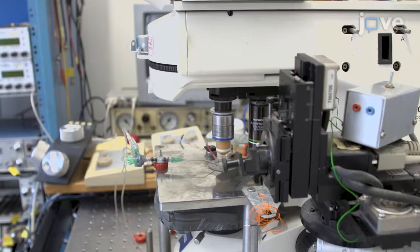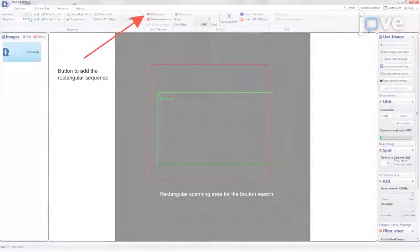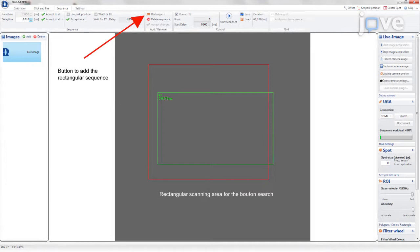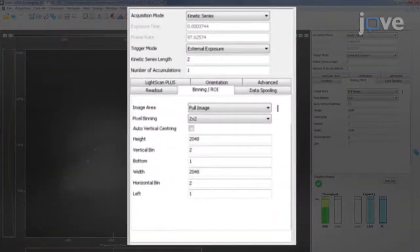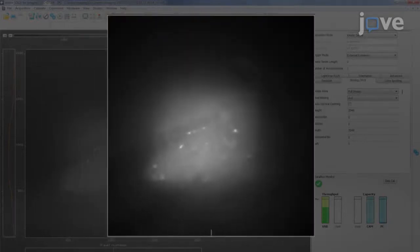Fix the slices with a nylon grid on a platinum harp to minimize tissue movement and switch to the 63x water immersion objective. Using a high-pass filter at 510 nanometers, acquire an image of the autofluorescent and glutamate sensor-positive structures together.